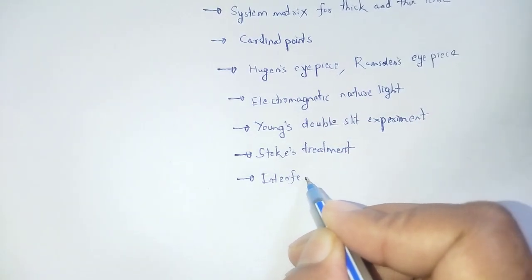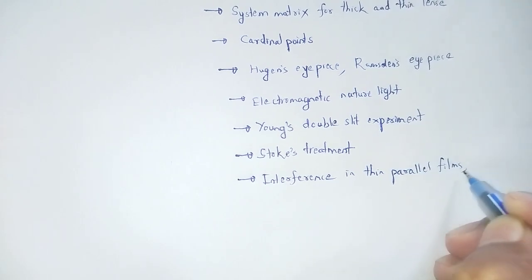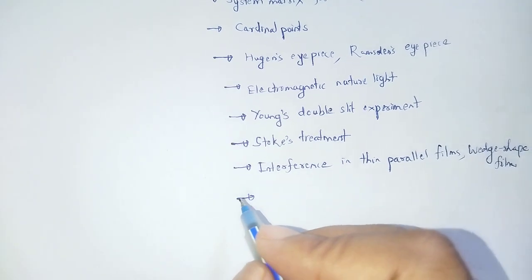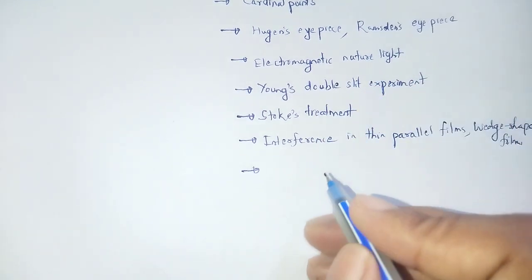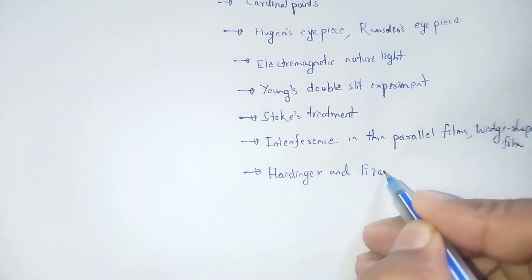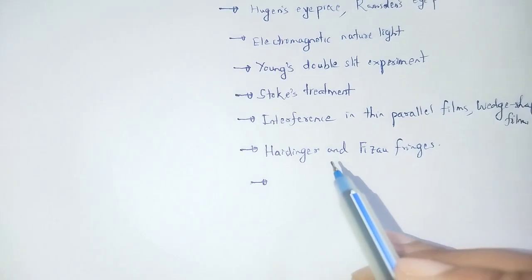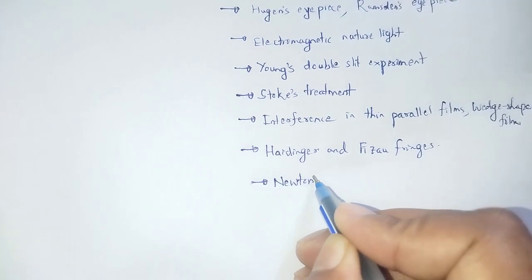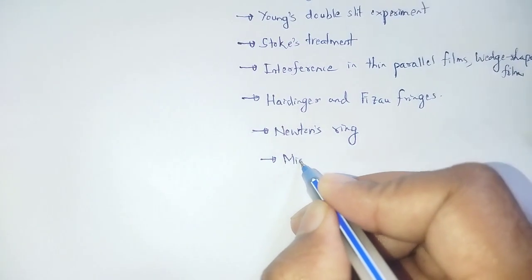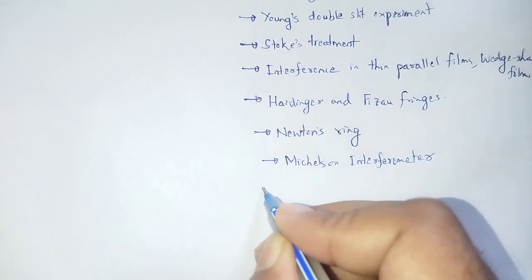Interference in thin parallel films and wedge-shaped films. Next, Haidinger fringes and Fizeau fringes — fringes of equal thickness. Next, Newton's ring. Then Michelson's interferometer and Fabry-Perot interferometer are important topics under interference.